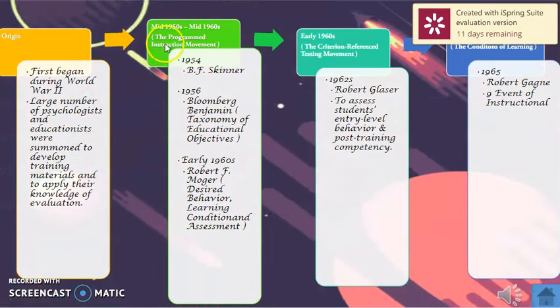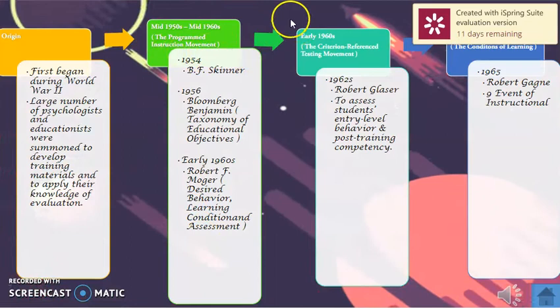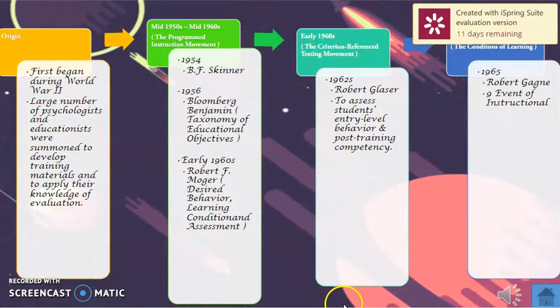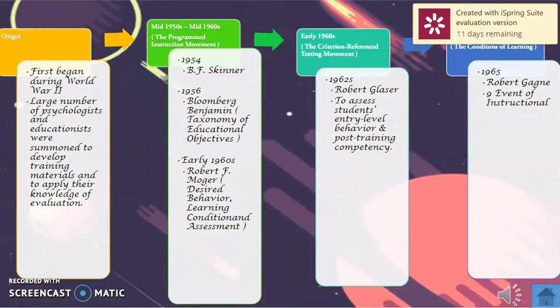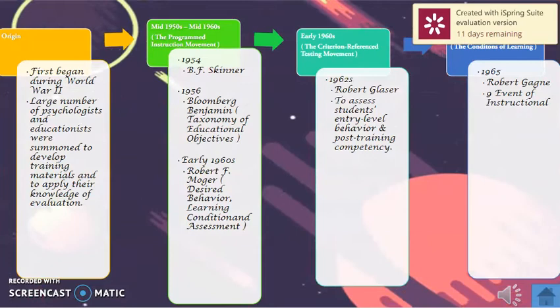Next, early 1960, the criterion reference testing movement was created from Robert Glaser. After this, in 1965, Robert Gagner developed the conditions of learning, which is 9 events of instruction.